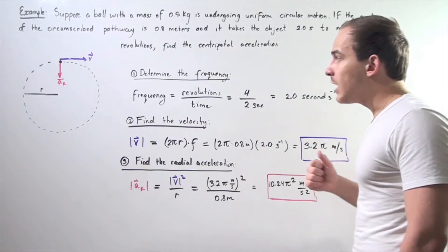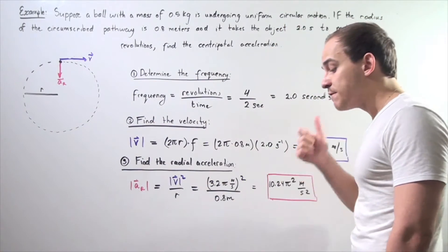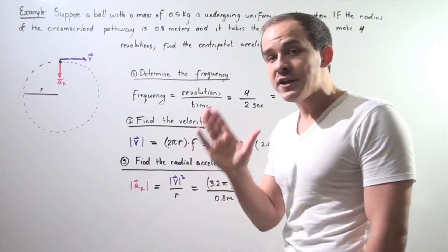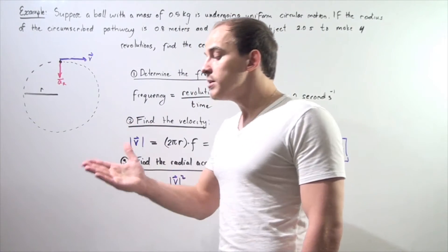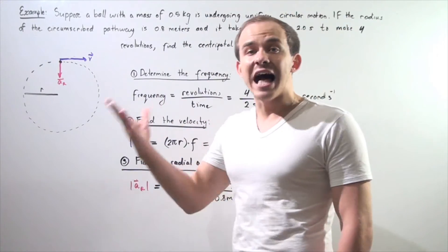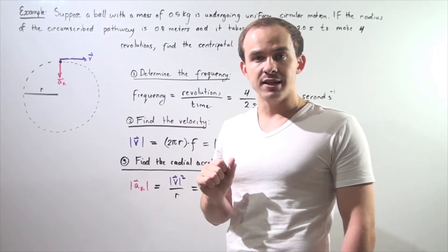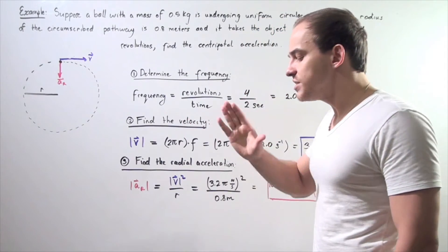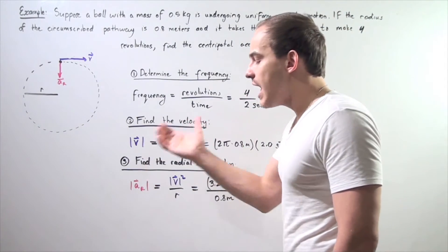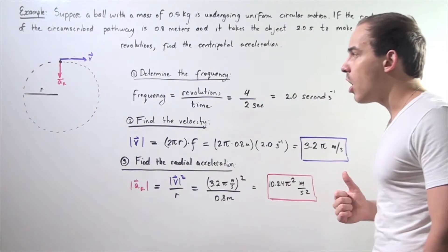We're following three steps. First, we must determine the frequency. Next, we use that to determine the magnitude of velocity. Finally, we use the magnitude of velocity to find the radial acceleration of our ball.